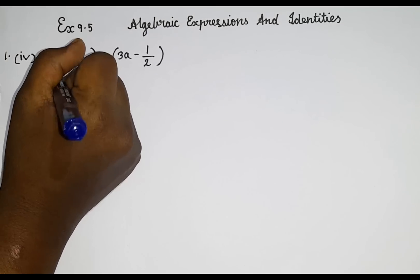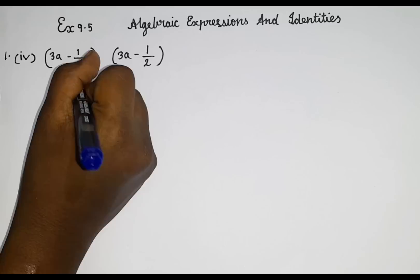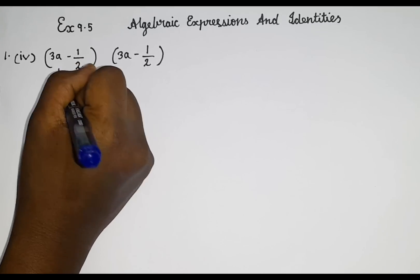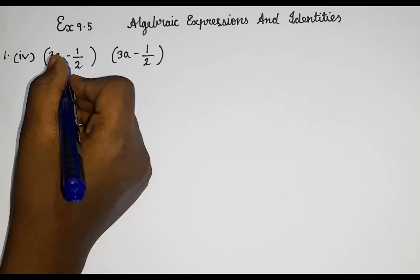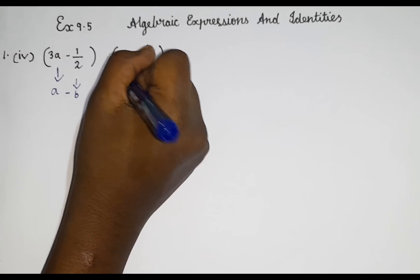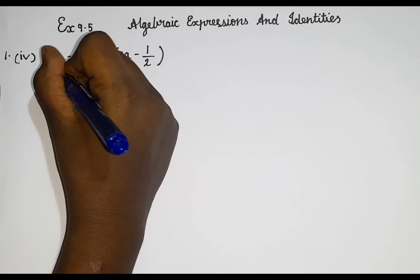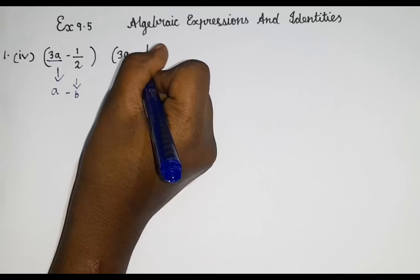At first, we will name it. So this is a. We shall name the next one as b. So a minus b because minus symbol. Next, again the 3a is repeating. See, here also we had 3a, here also 3a. So we named it as a.